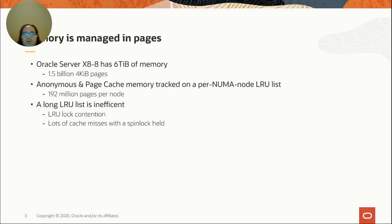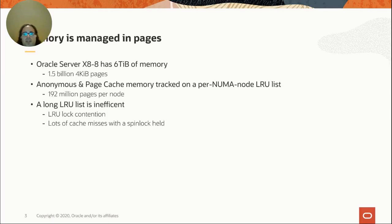When we talk about managing memory, the default units that we manage memory in is pages. On an x86 CPU, those pages are four kilobytes in size. When you look at a computer like the Oracle server X8-8, it's an eight CPU system, it has up to six terabytes of memory. That's one and a half billion four kilobyte pages — a lot of objects to be managing.